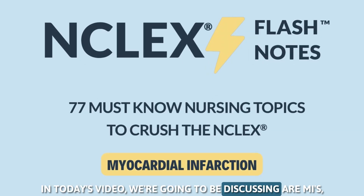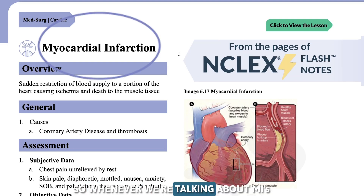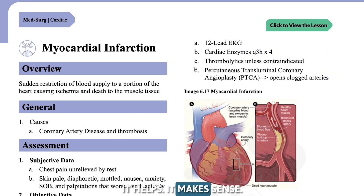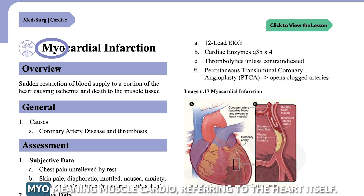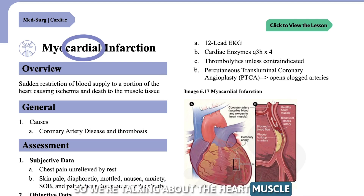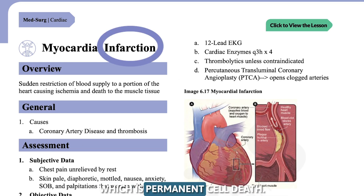In today's video, we're going to be discussing MIs, also known as myocardial infarctions. Whenever we're talking about MIs or myocardial infarction, I like to break it down like this — it helps it make sense. Myo, meaning muscle; cardio, referring to the heart itself. So we're talking about the heart muscle, and infarction, which is permanent cell death.